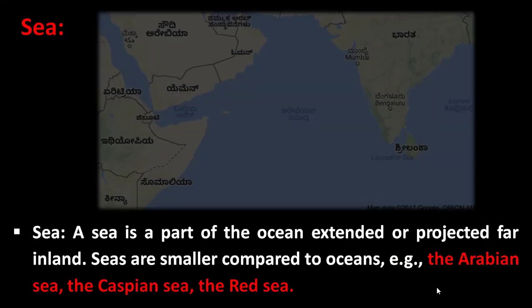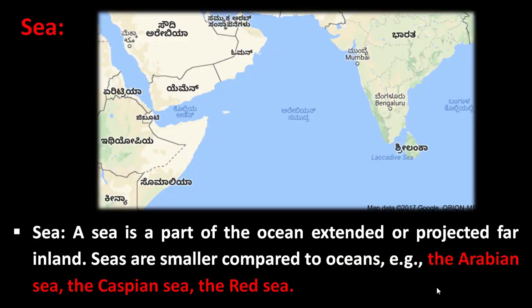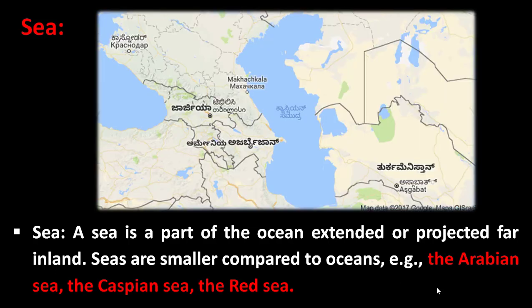The concept of a sea: a sea is a part of the ocean extended or projected far inland. Seas are smaller when compared to oceans. Examples include the Arabian Sea, the Caspian Sea, and the Red Sea.